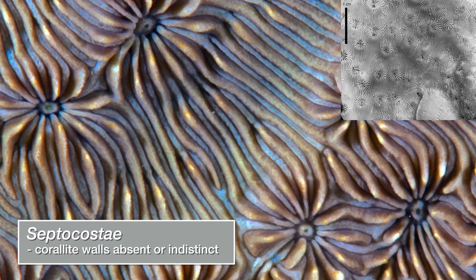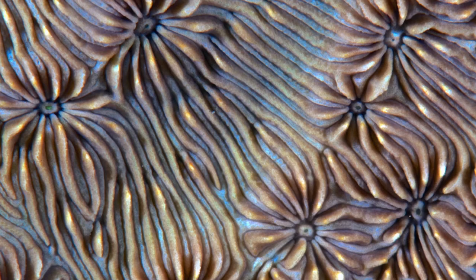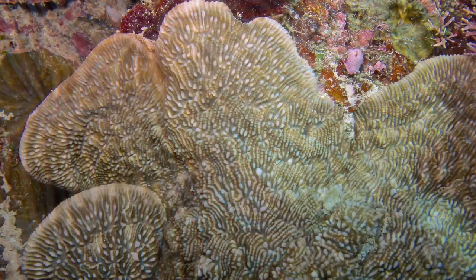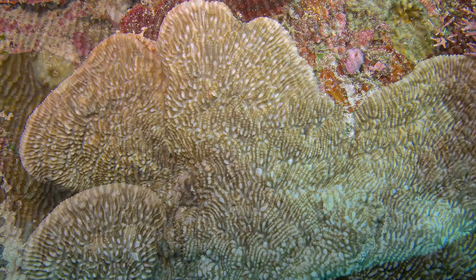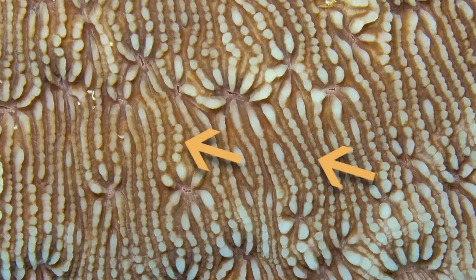Now we use the term septocosti to describe the linear skeletal elements that flow between each coralite center. In this photo, they are very clear, even through the tissue. Here is another coral with indistinct walls and, therefore, septocosti. This coral has large, granular teeth on its septocosti. This is just ornament — it doesn't change the concepts we are discussing.